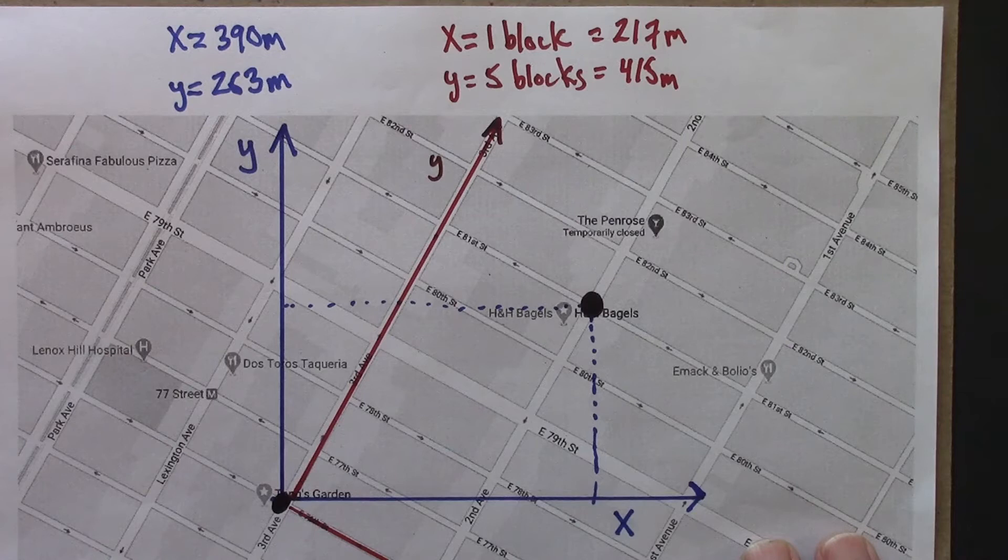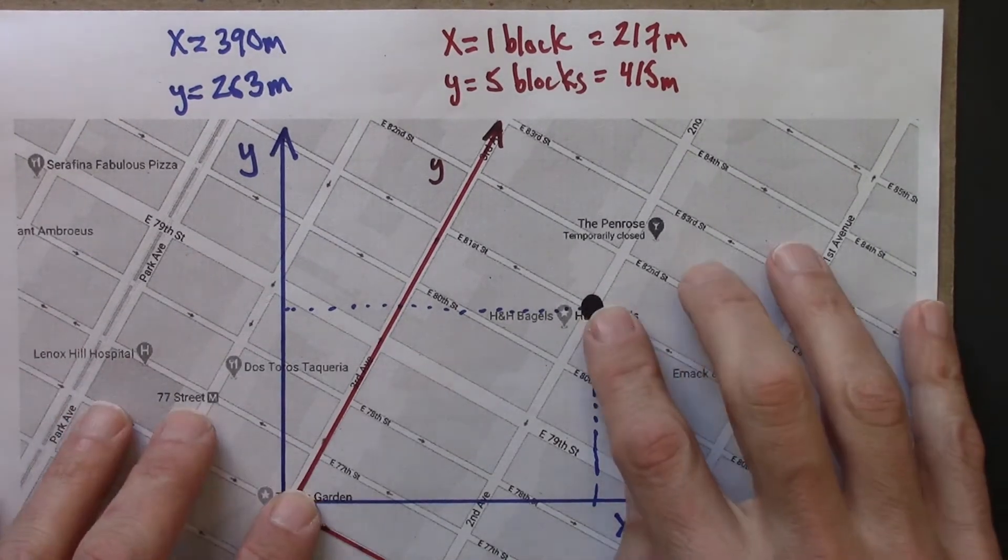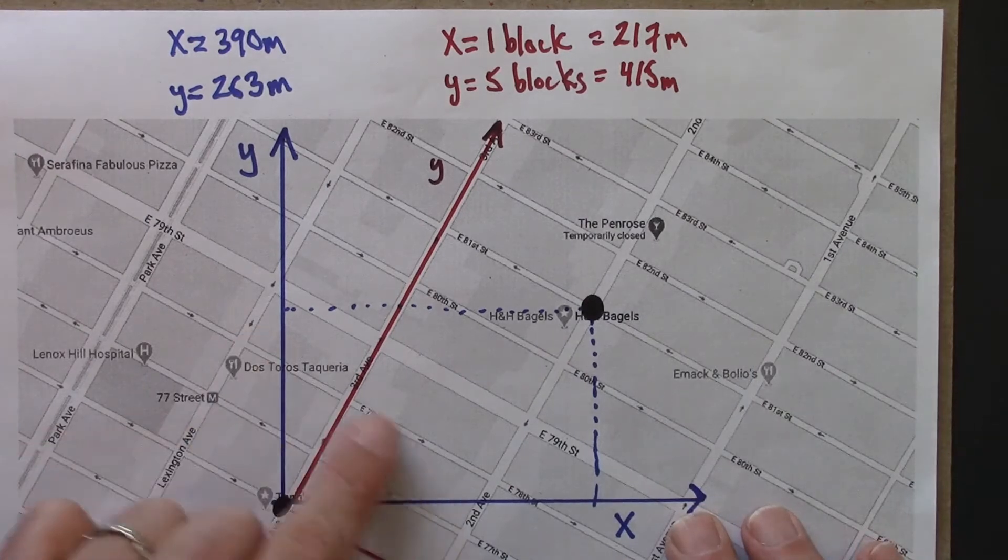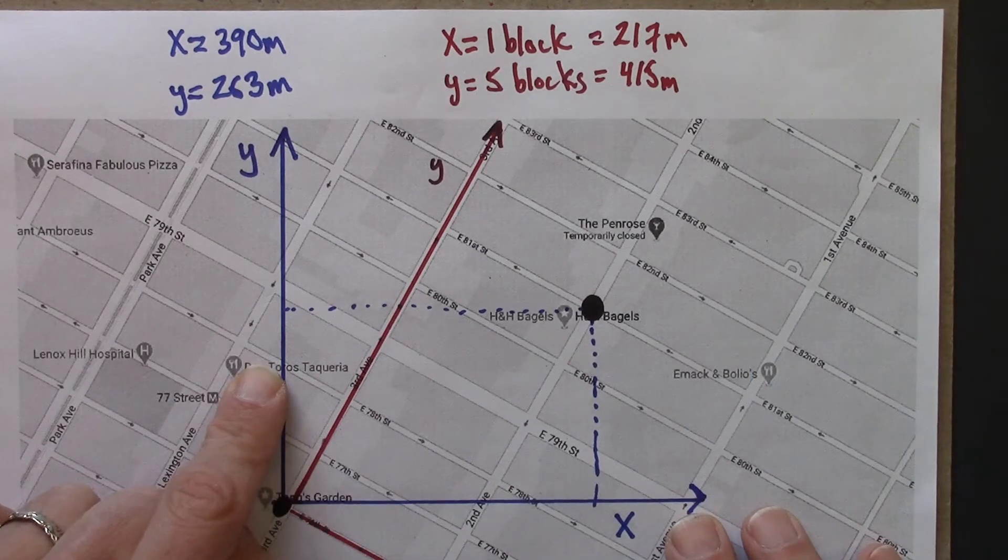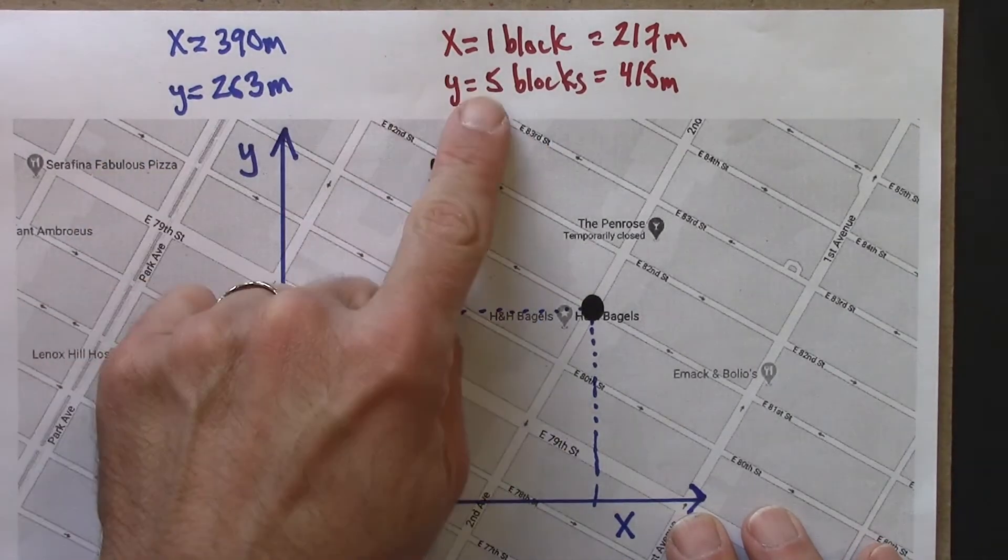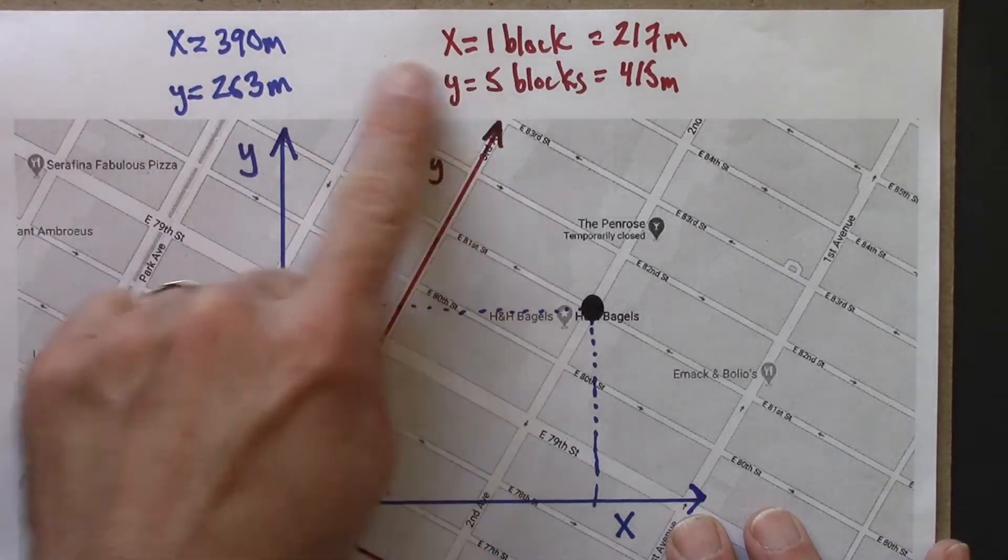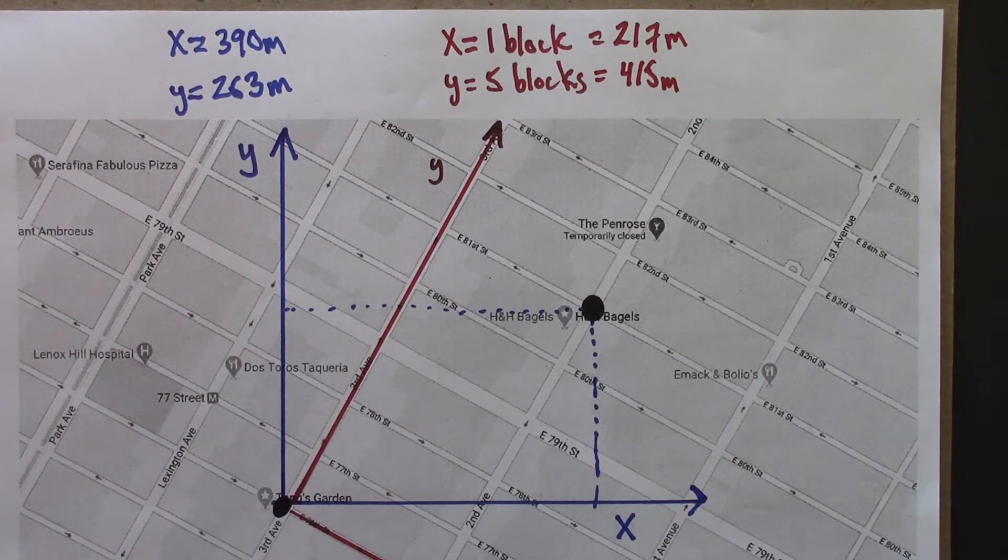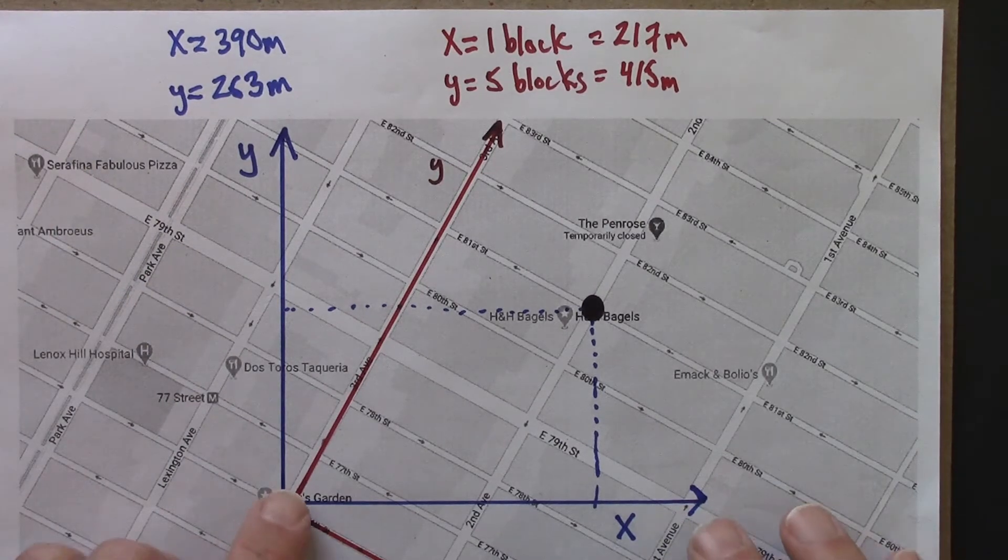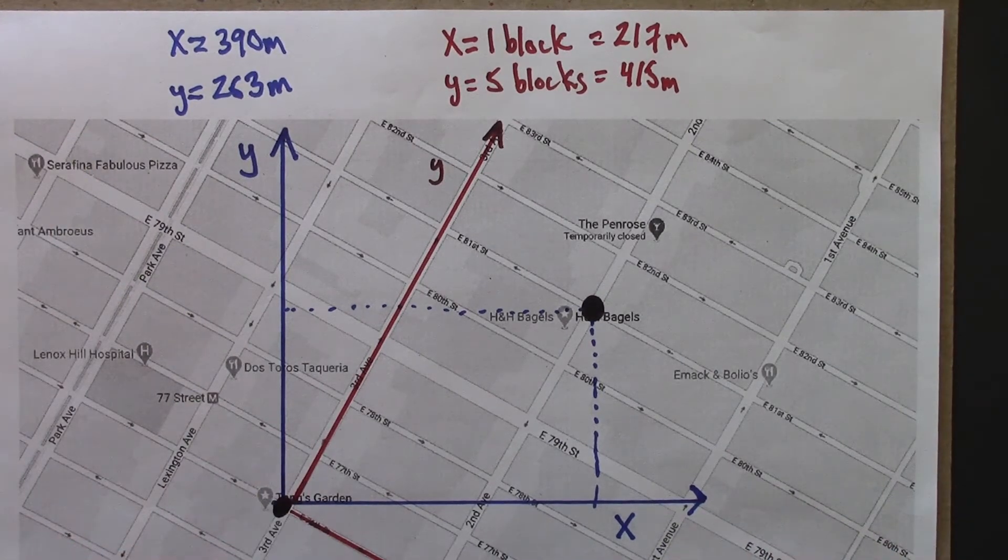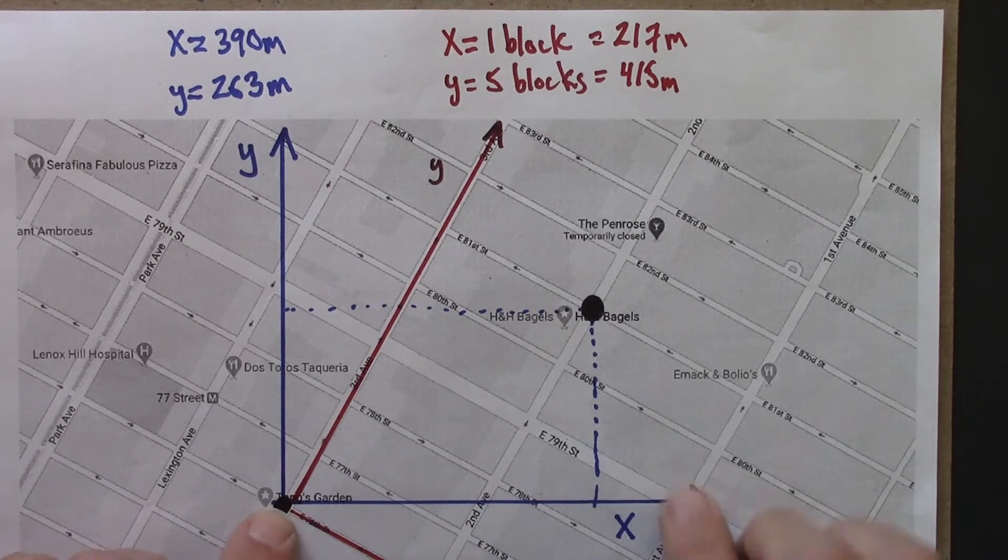But we might ask, is there some underlying reality here, some geometry that should be independent of the choice of coordinate systems? Is there anything that we might agree on according to the blue and red measurements? Is there anything that would be the same no matter what choice of coordinates we use? The answer is yes, there is, and that's the distance.